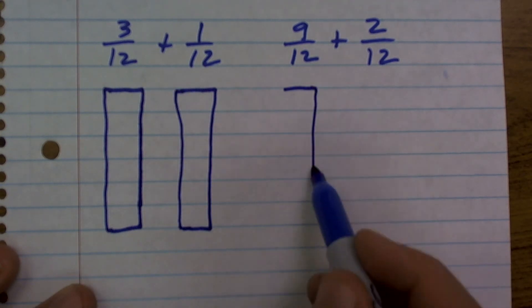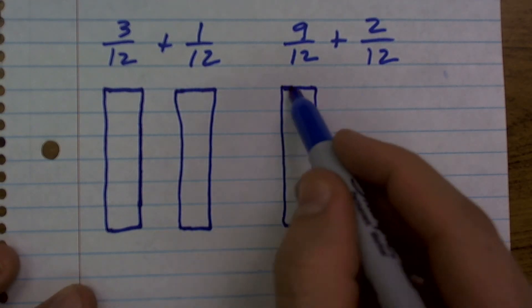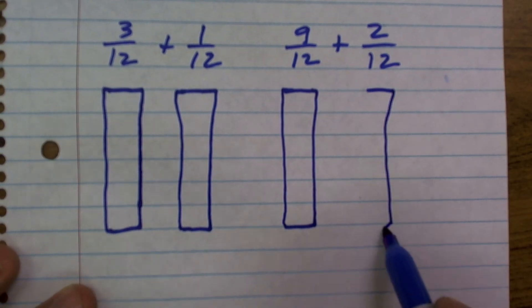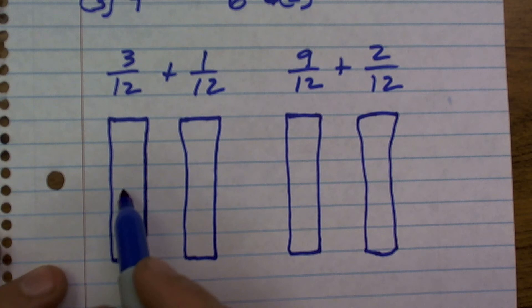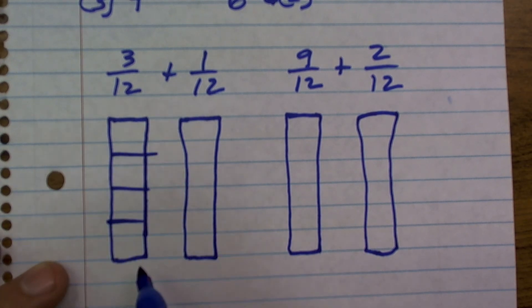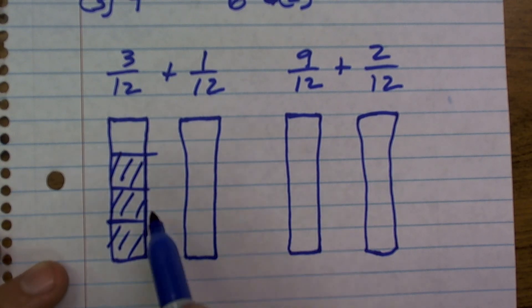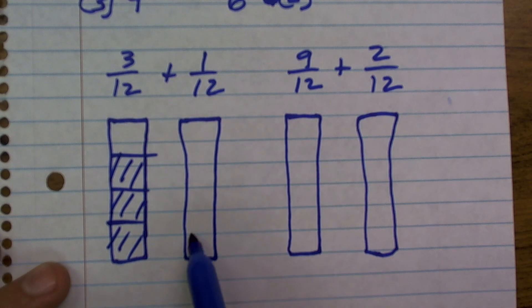So what I have is I have 2 bars here. Okay, so originally my problem I had it in fourths, right? And I had 3 of them. And I was going to add those 3 fourths to 1 sixth.